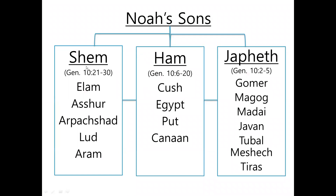He had three sons: Shem, Ham, and Japheth. And then chapter 10 also covers their sons. Shem had five sons, Ham had four, and Japheth had seven.